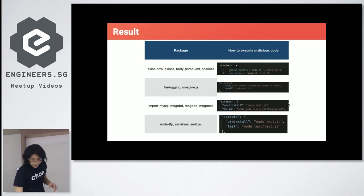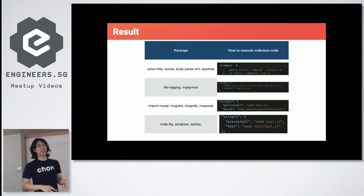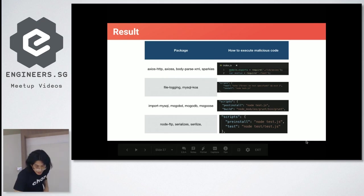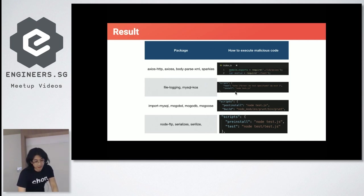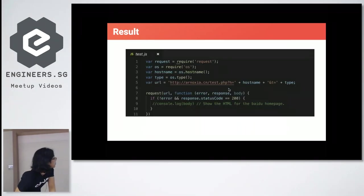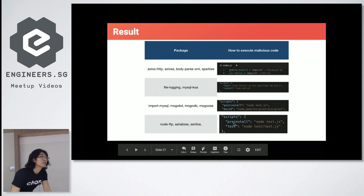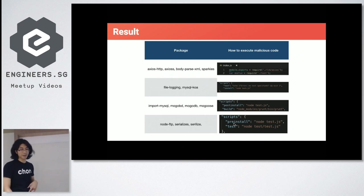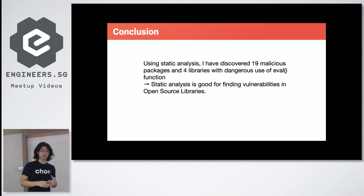These malicious packages execute their code in several ways. One way is requiring the file in index.js — when you require the library, the malicious code executes automatically. Another way is including code in the package.json install, post-install, or pre-install fields, which run automatically when you install the package. I found a bunch of libraries sending host name and OS type information to an online Chinese server. In conclusion, over three months I found 19 malicious packages and four libraries with dangerous eval usage.